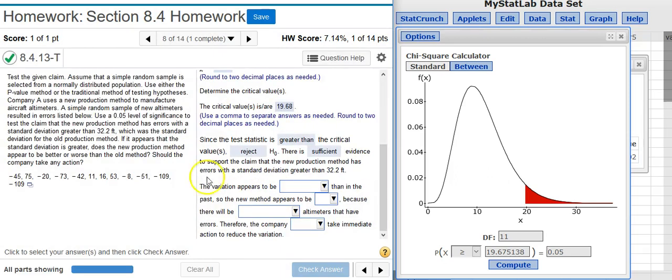And now the final part of the problem asks us to translate the results of the hypothesis test into real-world terms. We've rejected the null hypothesis. That means we're supporting the claim that our standard deviation is greater than 32.2. 32.2, as we learned from the problem statement, is the standard deviation for the old production method.